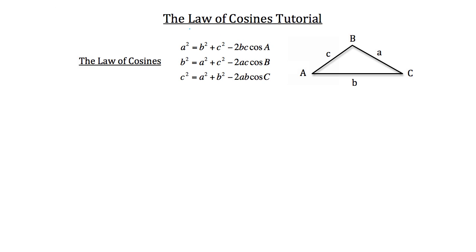Notice that you've got the side length a here and the cosine of that angle A here. That's going to be the same for each of the formulas. If you're starting with this side length, you're going to be solving for its angle underneath the cosine. And the same with angle C — if you solve for side length c, you'll be using angle C to do that.